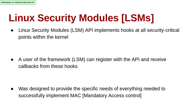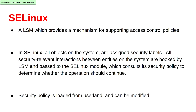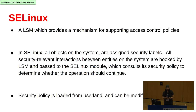The LSM API allows different security models to be plugged into the kernel, typically access control frameworks. A user of the framework can register with the API and receive callbacks from those hooks. It was basically designed to provide everything needed to successfully implement a MAC system in the Linux kernel.